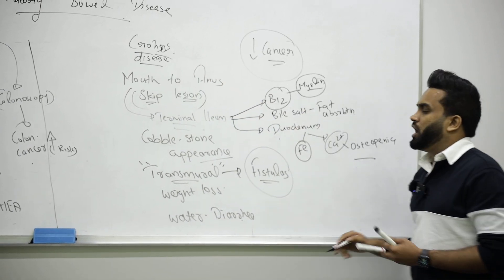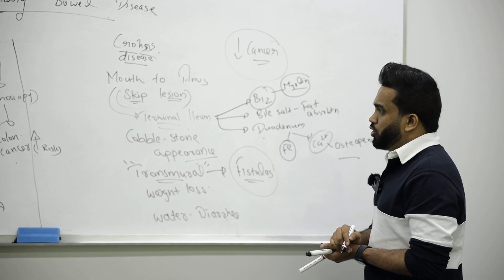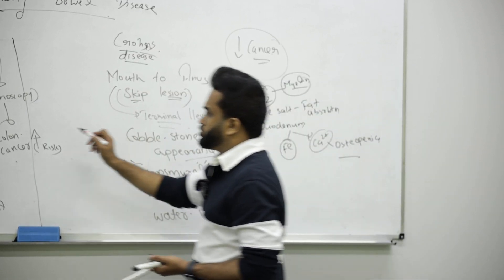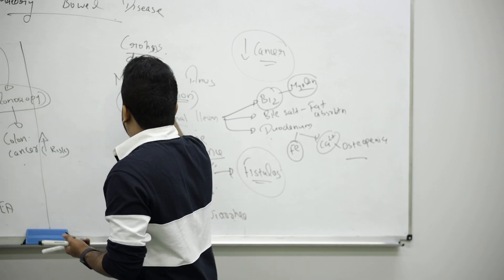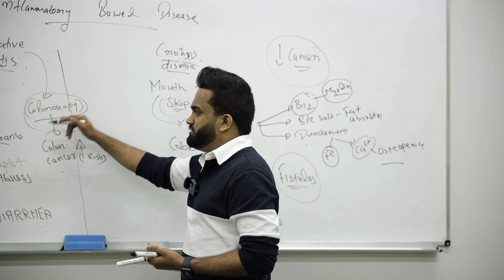How you screen: you do colonoscopy. In the case of Crohn's, you can't even see it because it's transmural. For ulcerative, we can clearly see from colonoscopy what is happening.